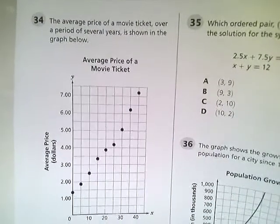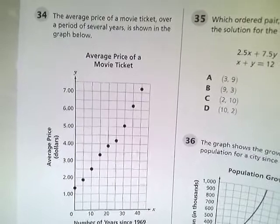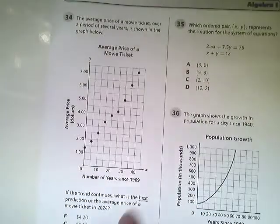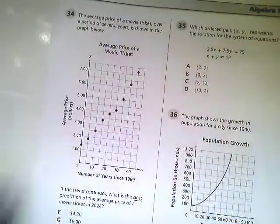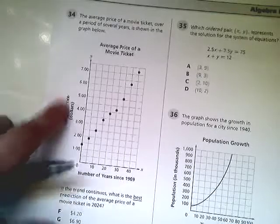It says the average price of a movie ticket over a period of several years is shown in the graph below. And here it is. We have the price of the movie ticket listed, the average price. This is in dollars and the number of years since 1969.